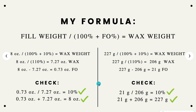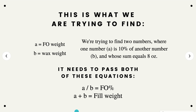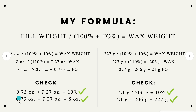To sum everything up: A represents the fragrance oil weight and B represents the wax weight. We are finding two numbers where the fragrance oil (A) is 10% of the wax weight (B), and whose sum equals 8 ounces. It needs to pass both equations: A divided by B equals the fragrance oil percentage of 10%, and A plus B equals the fill weight. That's exactly what we did and it passed the check test.